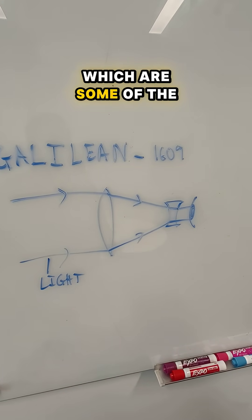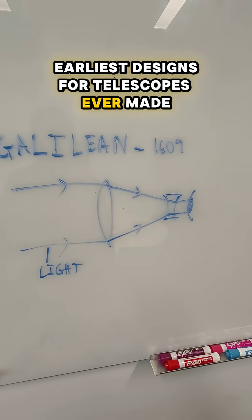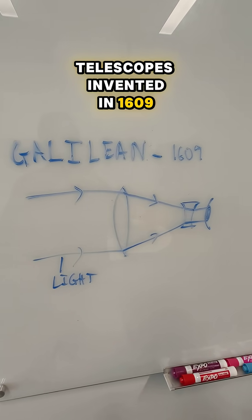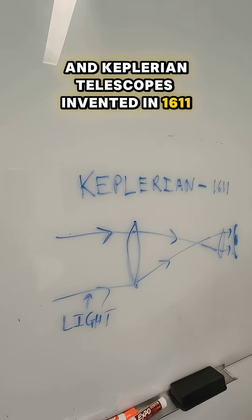Today we're going to talk about refracting telescopes, which are some of the earliest designs for telescopes ever made. Within these come two: Galilean telescopes invented in 1609 and Keplerian telescopes invented in 1611.